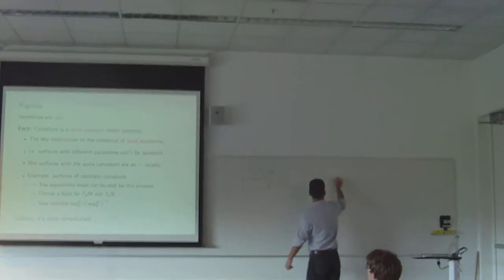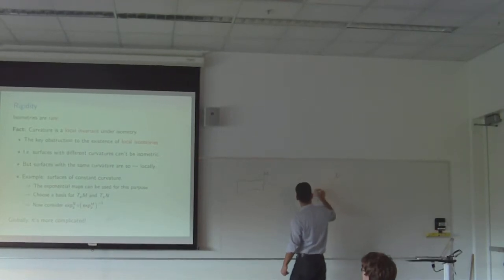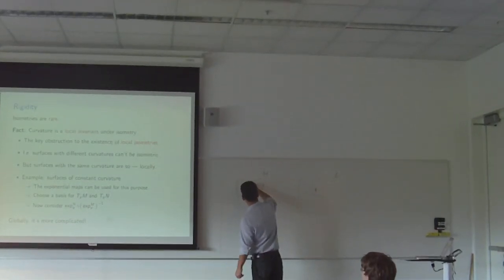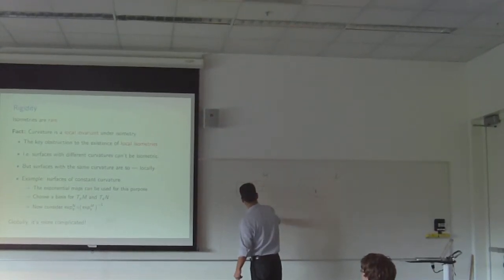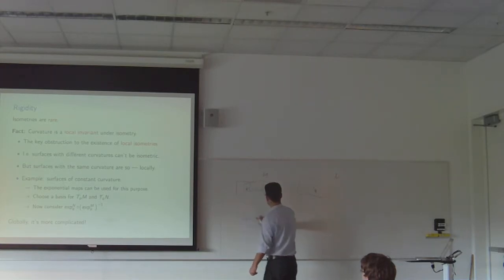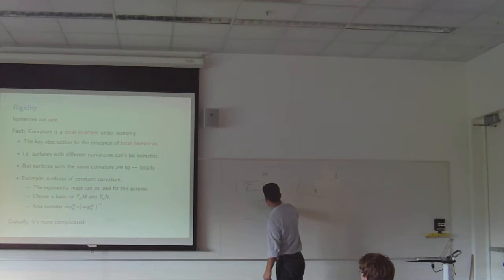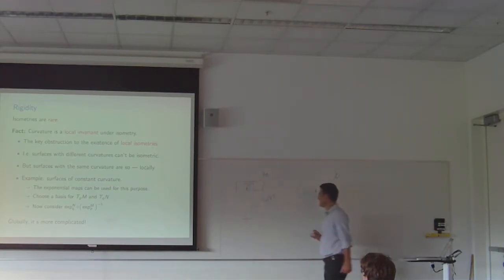Surface number 1 here, surface number 2 here, here's a point Q, here's a point P, and you can look at the tangent plane here, and of course the exponential map. What does the exponential map do? The exponential map goes from the tangent plane to the surface, so you say this point is exp_P of some vector v, where the vector v lives in the tangent plane.